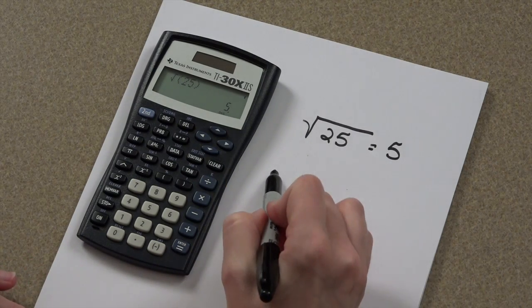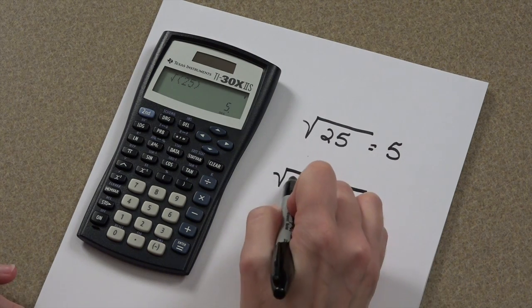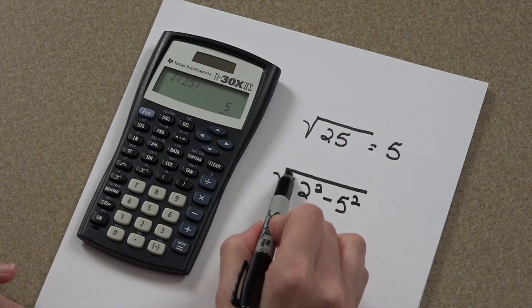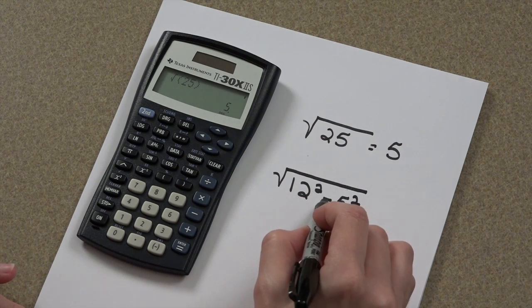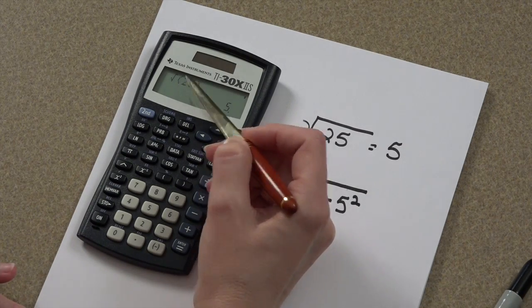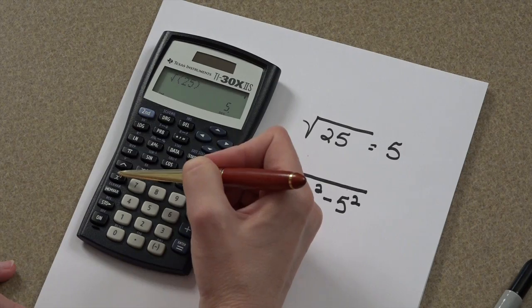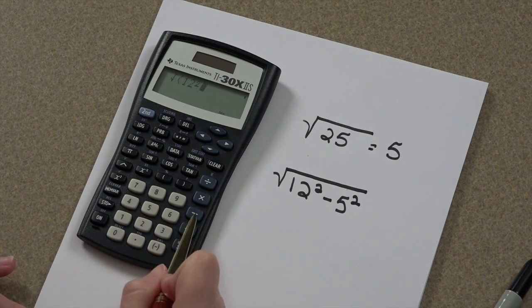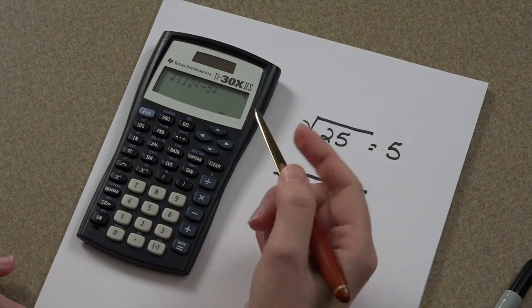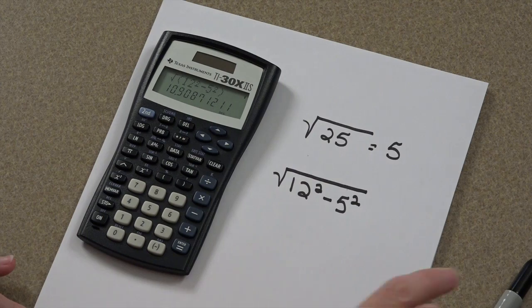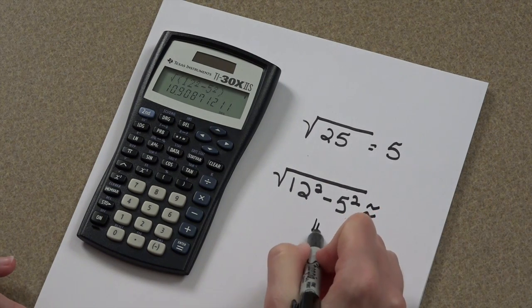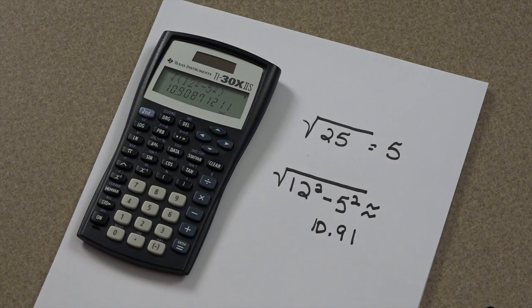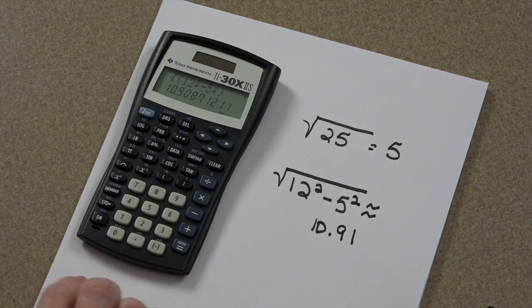Now, let's do something really cool. Let's say you have an expression. You want to actually take the square root of 12 squared minus 5 squared. That's where the parentheses are going to come in really awesome. We've submitted our square root. Now, we're going to take 12 squared minus 5 squared, close the parenthesis, and press enter. This answer is approximately 10.91. How efficient is that? That's amazing.